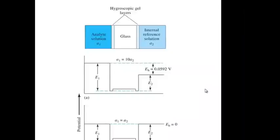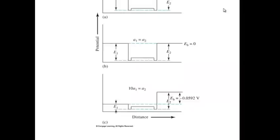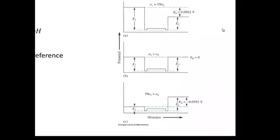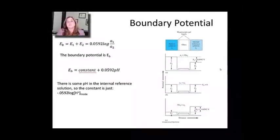What if the concentration inside and outside were equal? Well, in that case, you're going to have a log of 1, which is 0, and then you're not going to measure any difference. But, if it's the other way around for some strange reason, then, of course, you would go the other way. So, the boundary voltage then is going to just be equal to a constant plus 0.0592 times the pH.